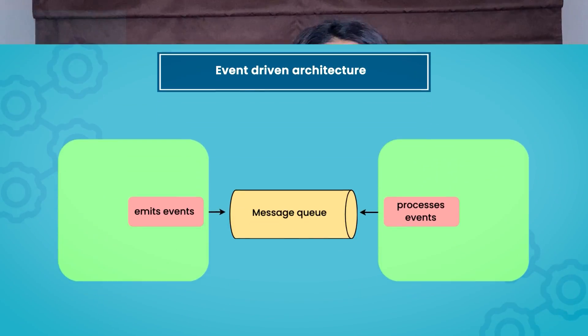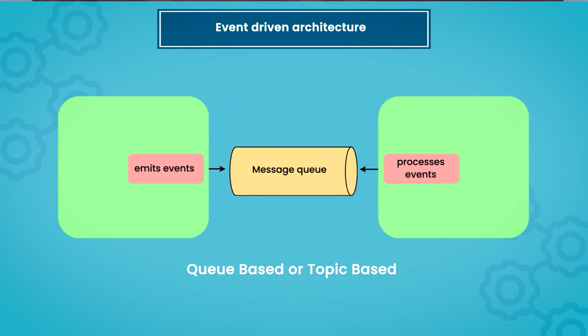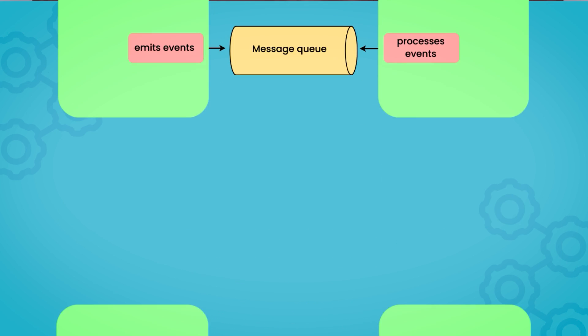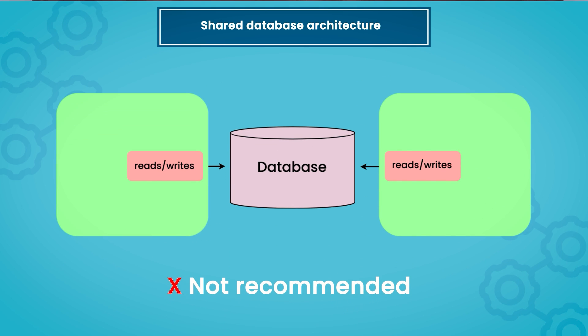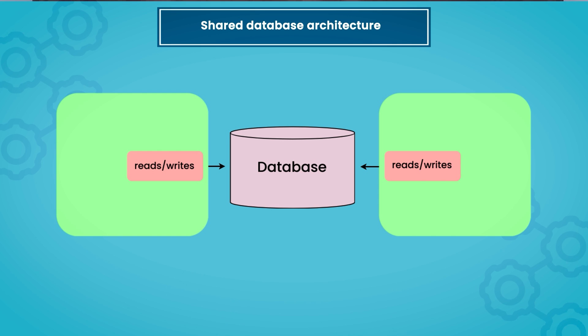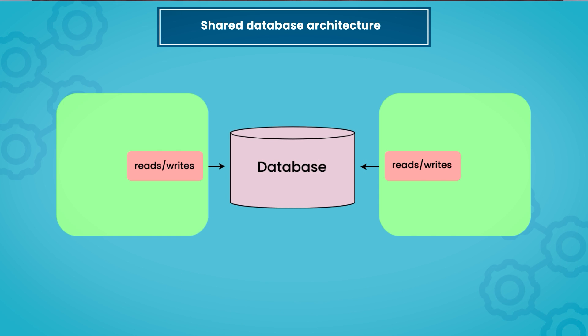In event-driven architectures, we rely on messaging systems, which can be queue-based or topic-based messaging systems. The third approach is the shared database, which is not a recommended approach, but we will see the use cases where it can be used. In this case, there is a common shared database between two different microservices.